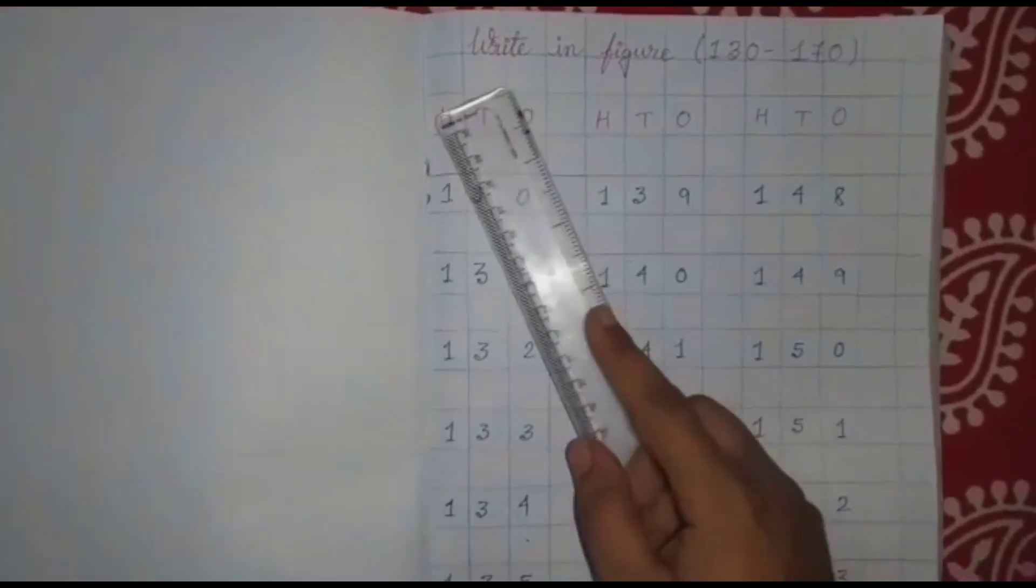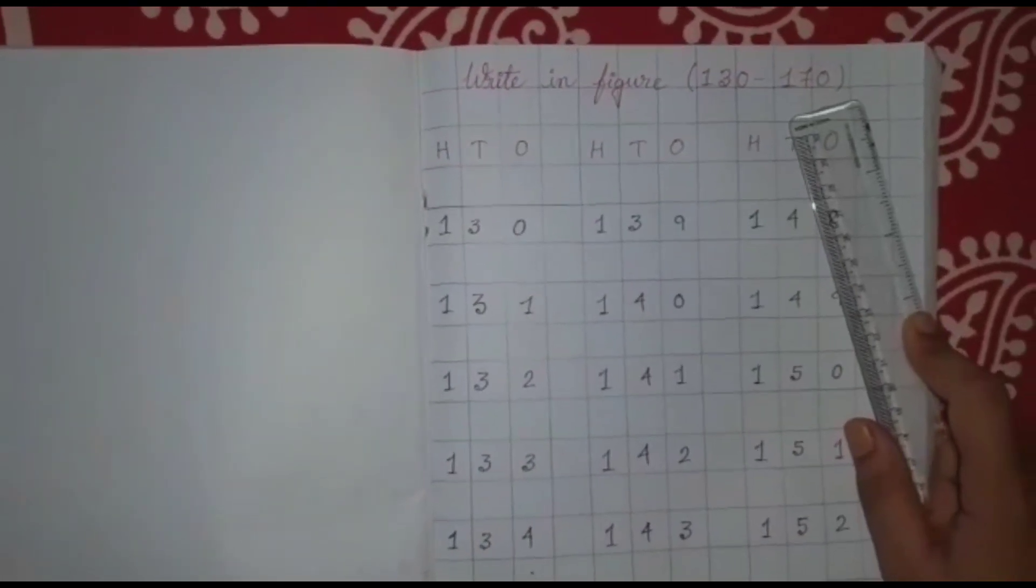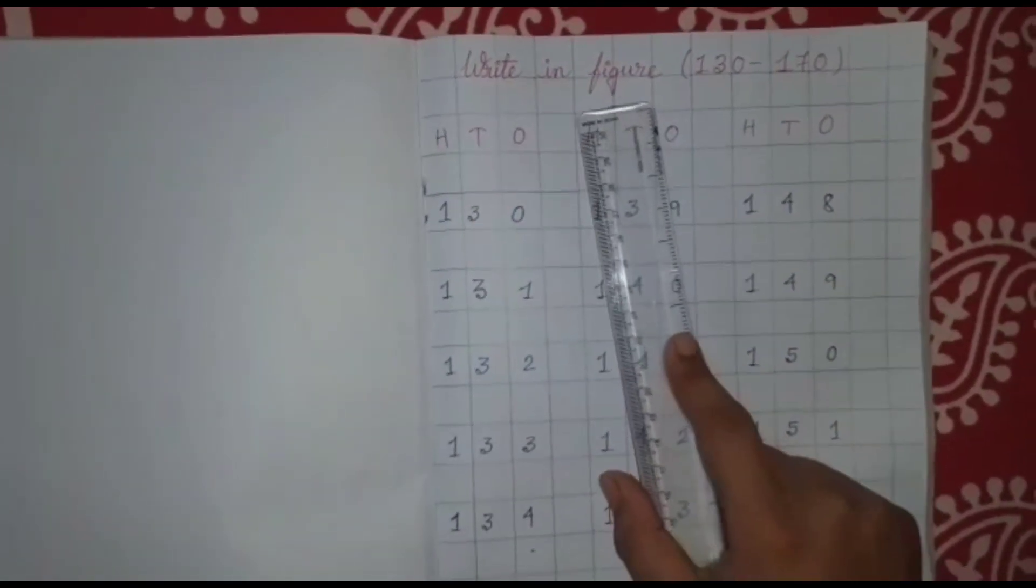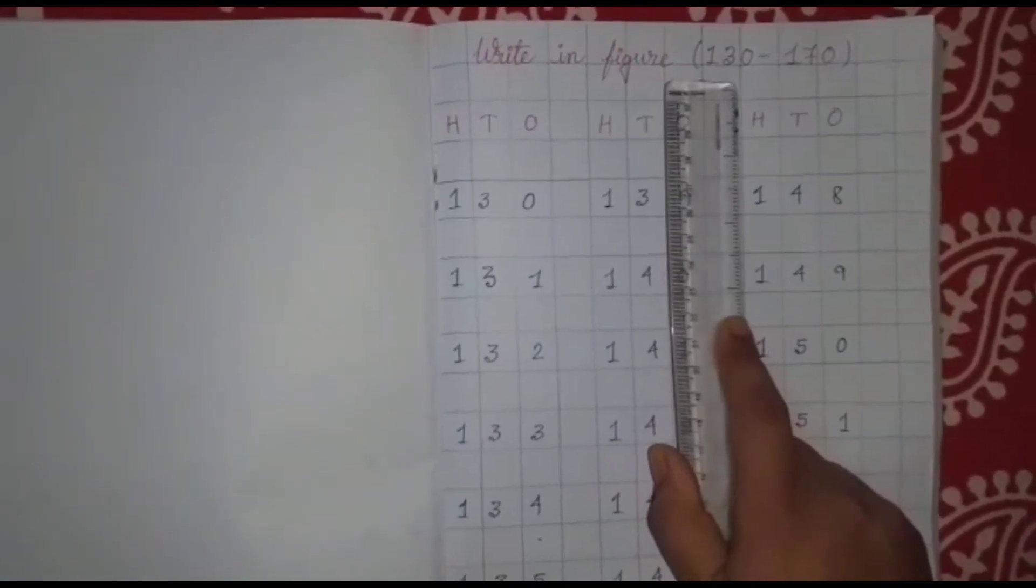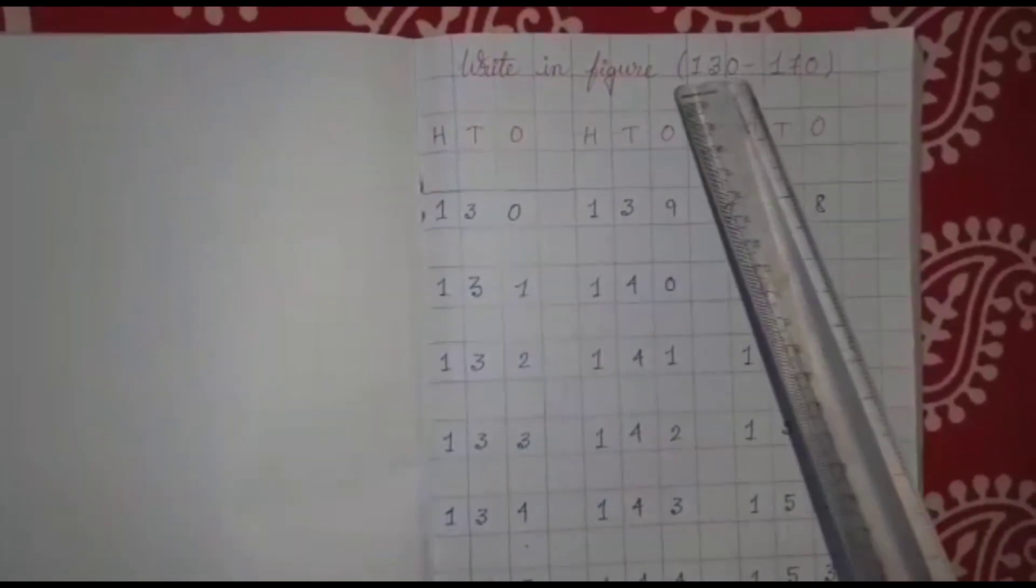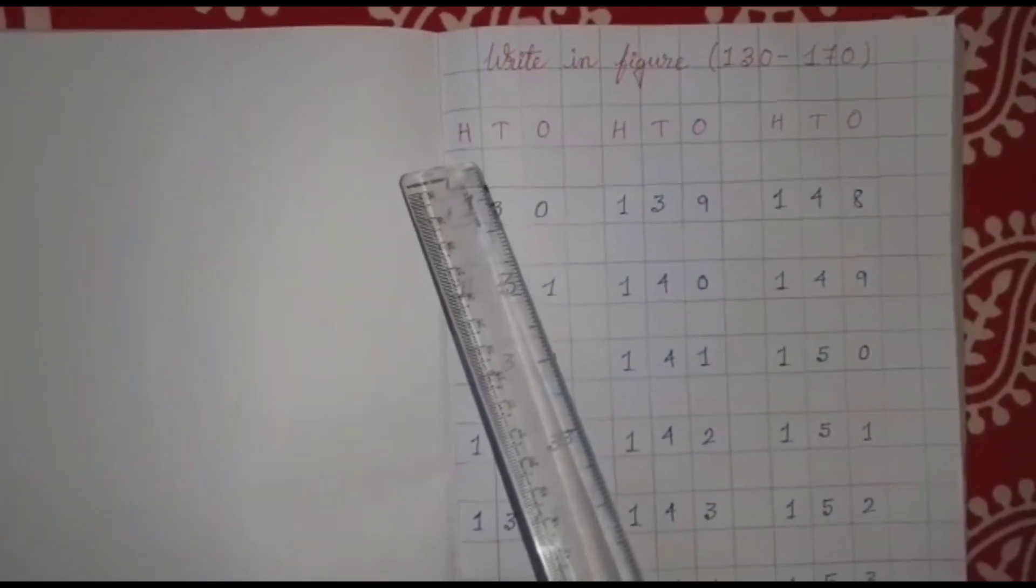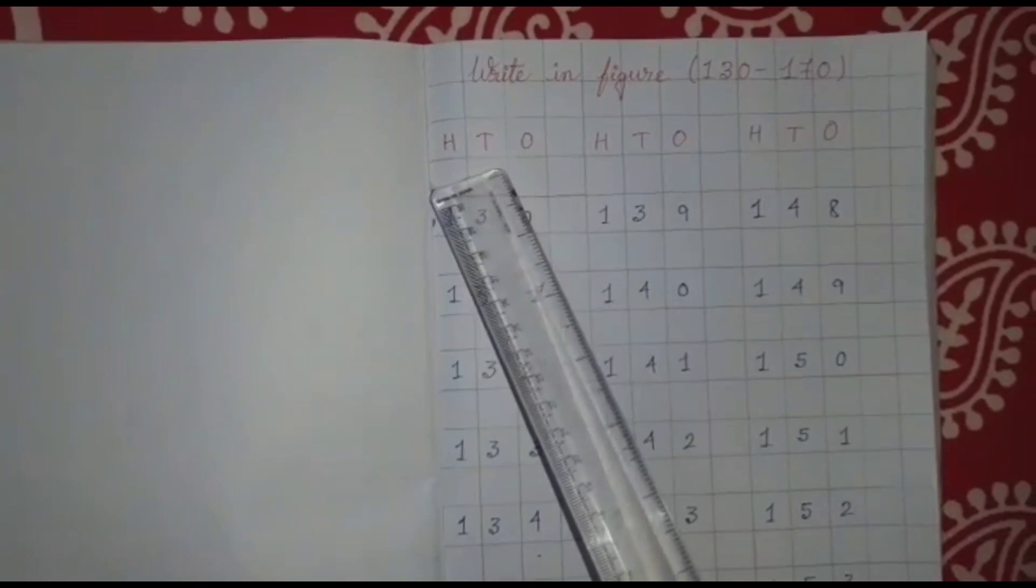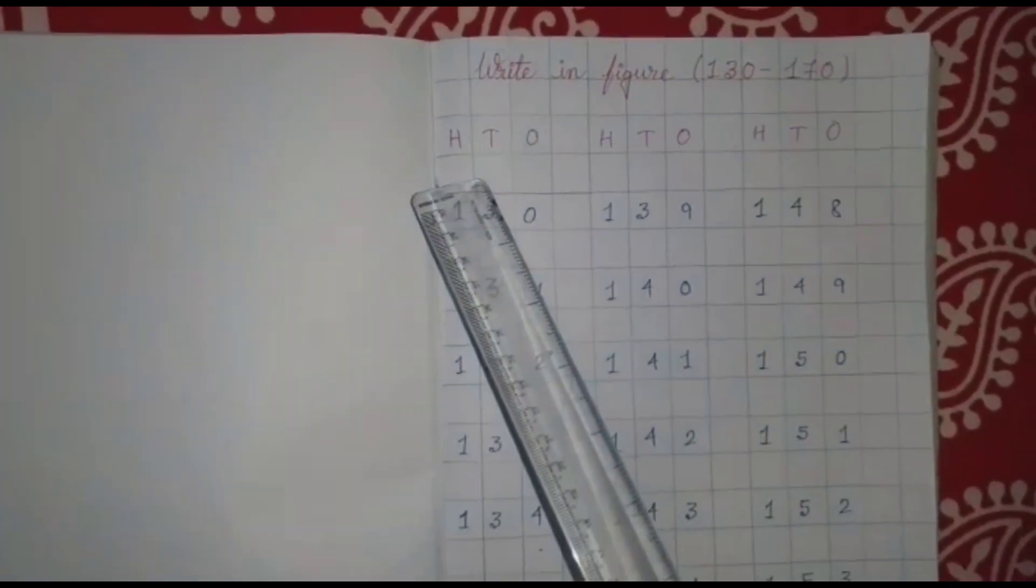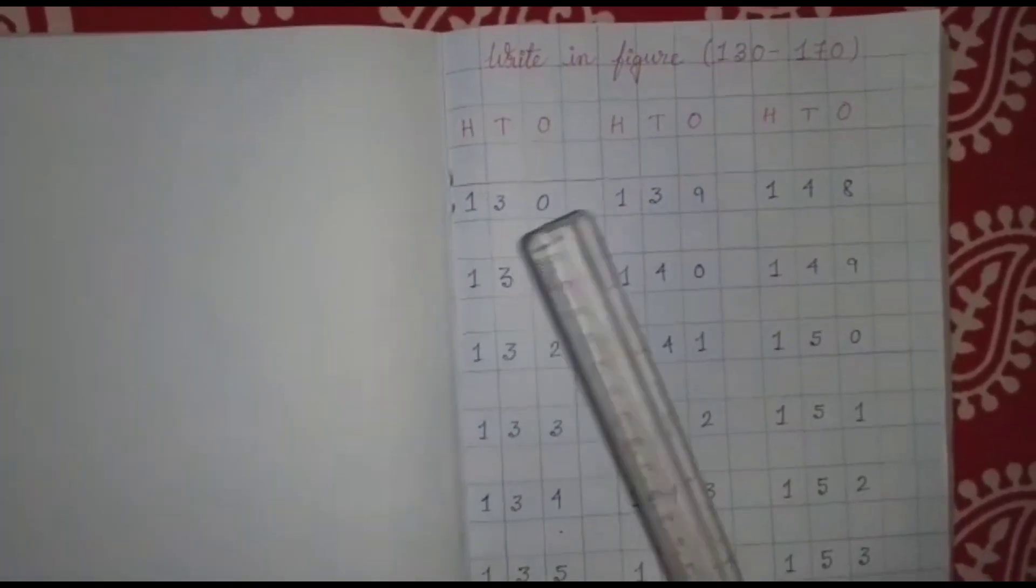As you can see, I have written the heading here. Write in figure 130 to 170. You know, you should always write the heading on top. W-R-I-T write, I-N in, F-I-G-U-R-E figure. Write in figure 130 to 170. Here we have written O, T and H. Can you remember what these are? O is 1's place, T is 10's place and H is 100's place. Today we are going to write from 130 to 170. So, let's start.